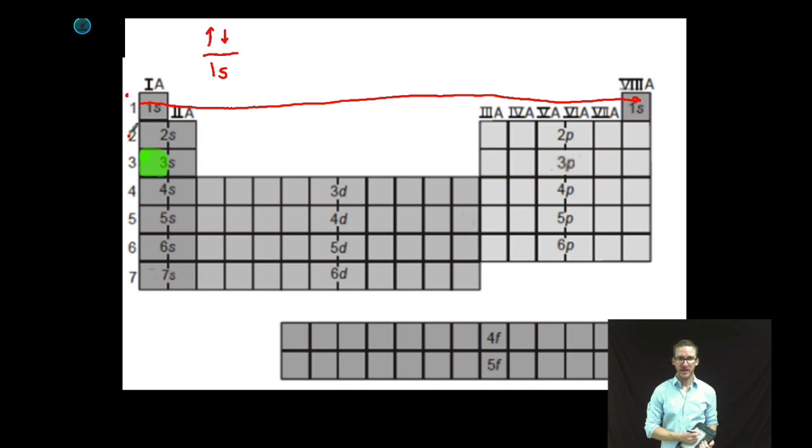Where to next? Second main energy level. But in the second main energy level, I actually have two types of sublevels. I have the 2s sublevel and the 2p sublevel. Remember, the 2p sublevel is made up of three p orbitals.